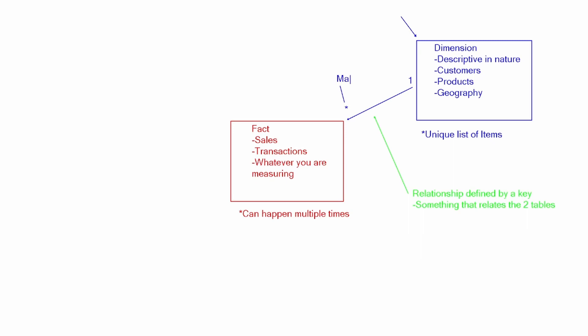The fact table is the many side, denoted by the star character. This is the many side of the relationship because there can be many different transactions or many different sales within the fact table. A fact table is essentially whatever you're measuring. As we understand the relationship created between these two tables, it's defined by what's known as a key column — a column present in both tables.